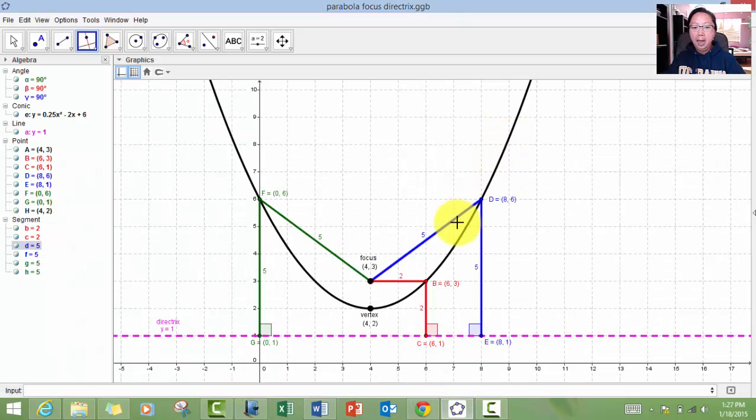Okay, so right here you have a curve called a parabola. The parabola has a vertex at 4, 2. It has a focus at 4, 3, and a directrix called y equals 1.